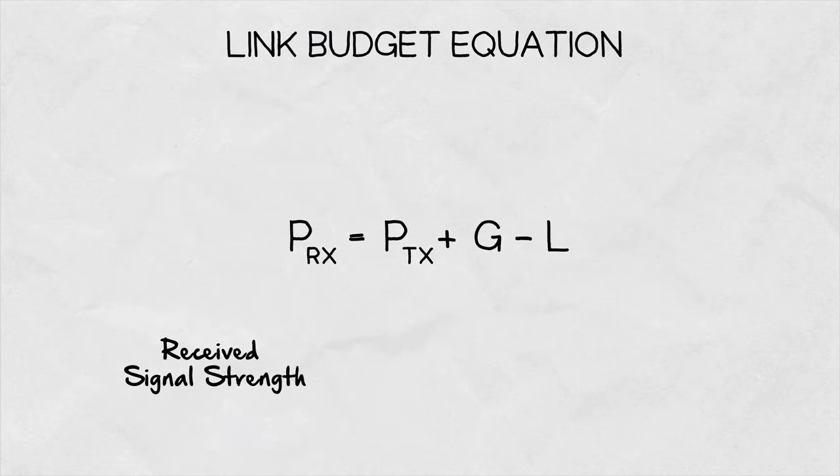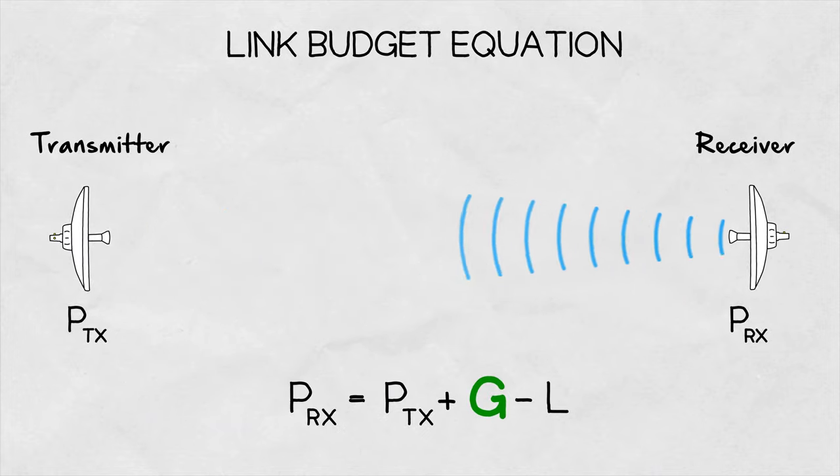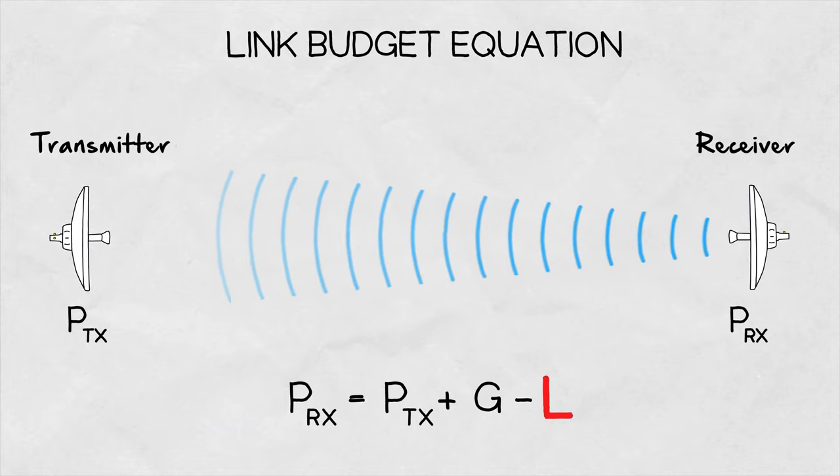It essentially calculates the strength of a signal on the receiver side, considering three main components. The power a transmitter radio can deliver, the gain of both antennas, and any loss that occurs during the transfer.